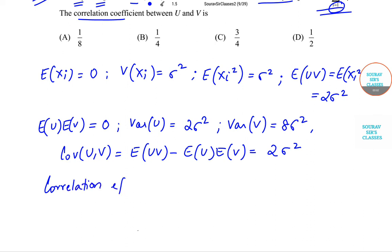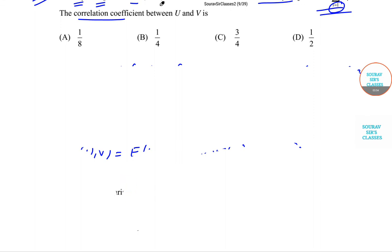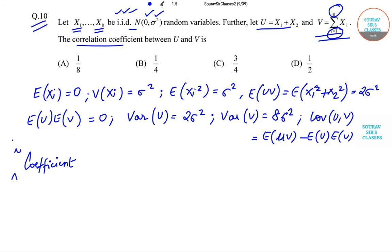So the correlation coefficient between U and V will be given by Cov(U,V) divided by the square root of Var(U) times Var(V).